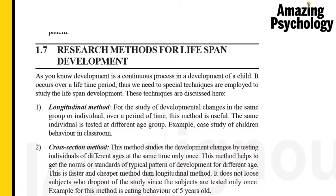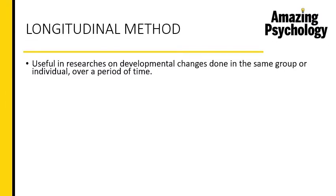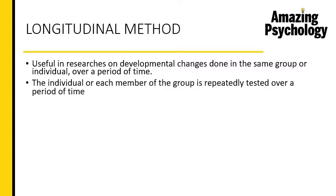The longitudinal method is useful in research on developmental changes done within the same group or within an individual over a period of time. We are measuring what kinds of changes in development have occurred — within the same group or within one individual — over a span that could be six months, one year, or even ten years, depending on the research. Each member of the group is repeatedly tested over time for the same factors, from the beginning of the study to the end.